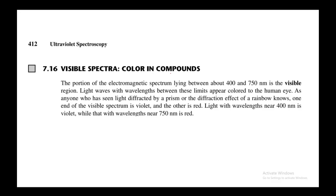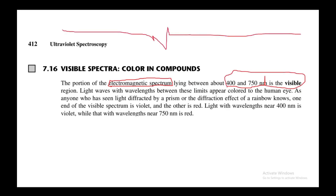In this video we will be learning about visible spectra: why some compounds look colored, and what is the difference between absorbed color, absorbed wavelength, and emitted color. The portion of the electromagnetic spectrum lying between 400 to 700 nanometers is the visible region. The electromagnetic spectrum contains UV, far UV, X-rays, NMR radiations, and radio waves, and also has an IR range.